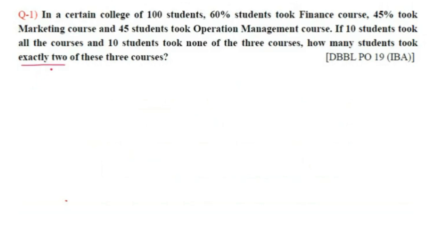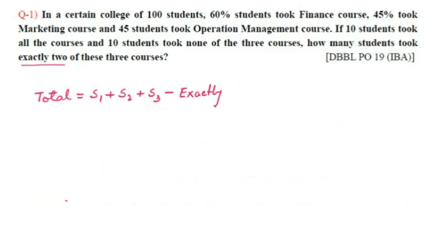For exactly two, this is a three-set problem. The formula for three-set questions is: Total = Set1 + Set2 + Set3 − (sum of exactly two) − 2×(all three) + none.